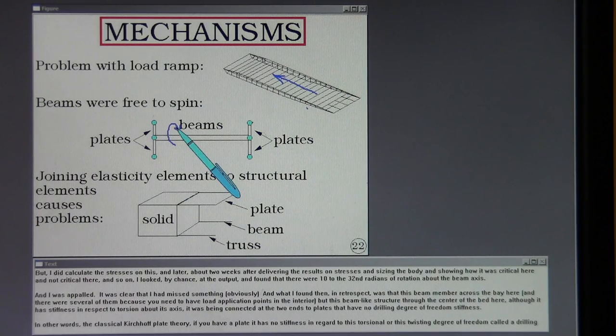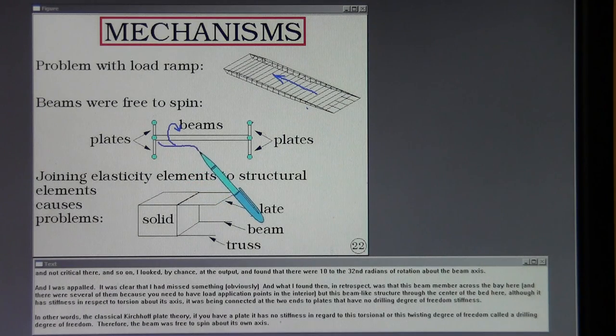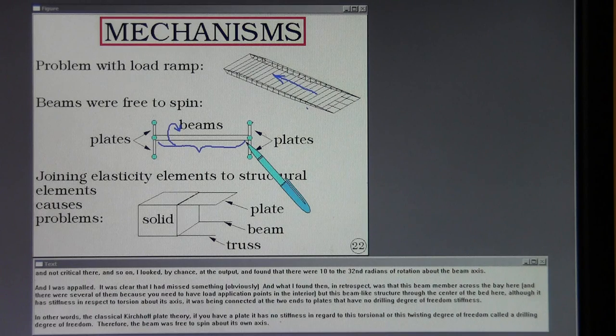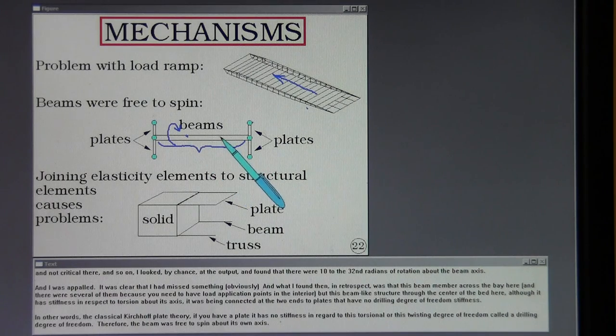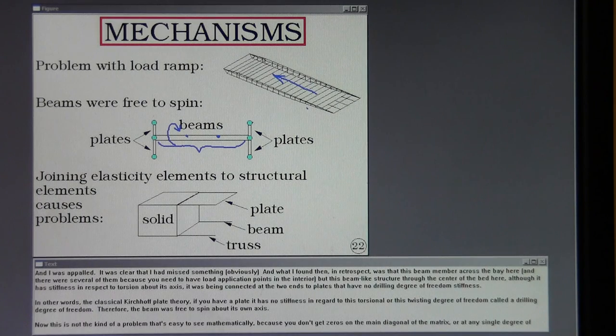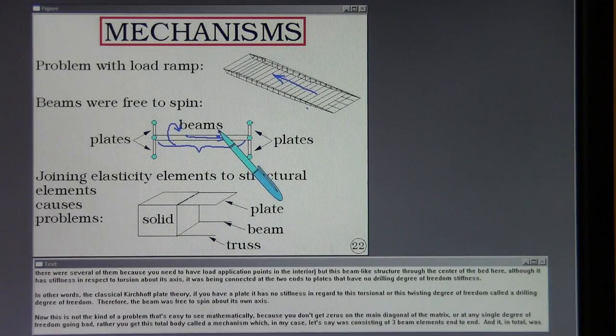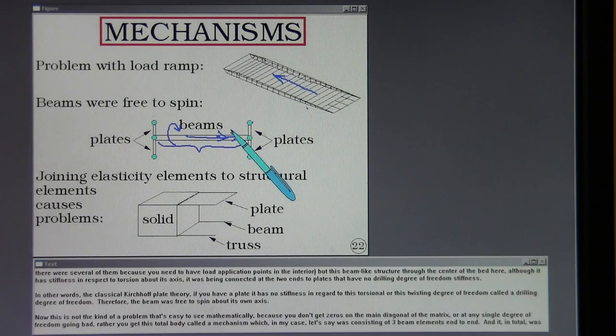And I was appalled. It was clear that I had missed something, obviously. And what I found then, in retrospect, was that this beam member across the bay here, and there were several of them because you need to have load application points in the interior. But this beam-like structure through the center of the bed here, although it has stiffness in respect to torsion about its axis, it was being connected at the two ends to plates that have no drilling degree of freedom stiffness.